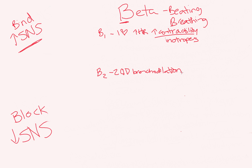Let's talk about examples of these drugs. For beta 1 on your heart, I like to think the heart sort of sounds like 'dope,' so dopamine and dobutamine are examples of beta 1 drugs. Other drugs that cause inotropic activity — increased heart rate, increased contractility — are epinephrine, norepinephrine, as well as milrinone, which is used more in pediatrics. Drugs that increase contractility are also called inotropes or positive inotropes.